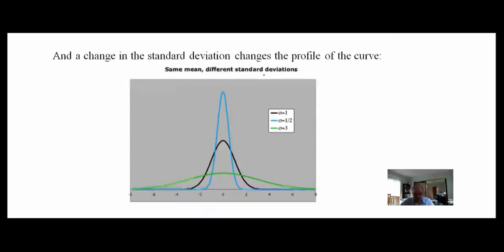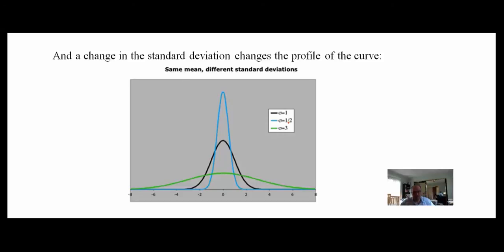The standard deviation controls the profile of the curve — whether it's pointy or spread out. All three curves shown are normal distributions. With standard deviation of 1 (black), 0.5 (blue), and 3: a smaller standard deviation shrinks the curve in; a larger one spreads it out. They're all still exactly symmetric, and the same standard-deviation rules apply — just spread differently.